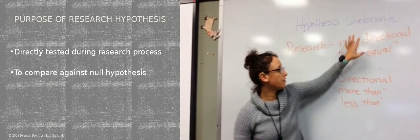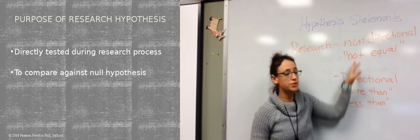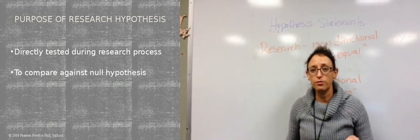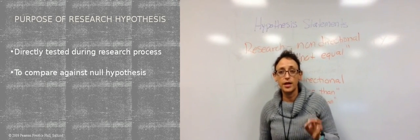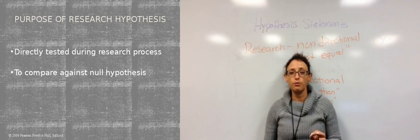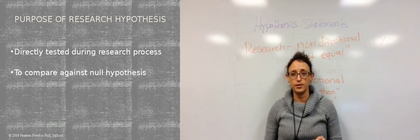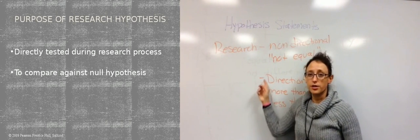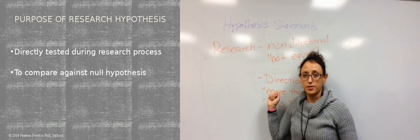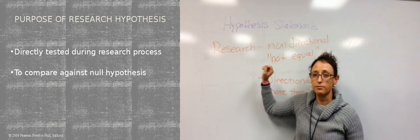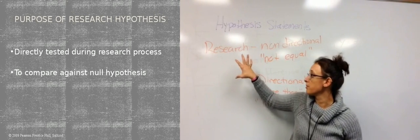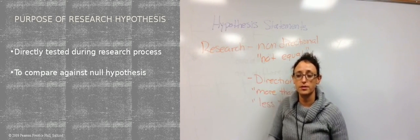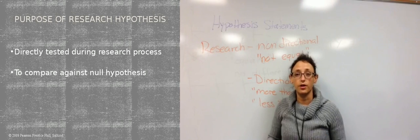The purpose of this is that we're assuming the null is true, and this is what we're testing whenever we use the scientific method in psychology. Whenever we go through our research process, these are what we're testing — directional and non-directional research hypothesis statements. We're going to take these statements and compare them against the null hypothesis at the end of our research.